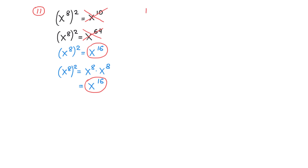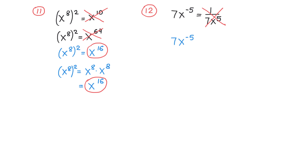The last common mistake involves 7x to negative 5. Since simplified expressions must have only positive exponents, we move x to the denominator. Writing this as 1 over 7x to the positive 5 is incorrect. Here we have a product of 7 and x to negative 5; only x has a negative exponent, while the exponent of 7 is positive 1. Therefore we keep 7 in the numerator and move only x to the denominator, giving the correct answer 7 over x to the positive 5.